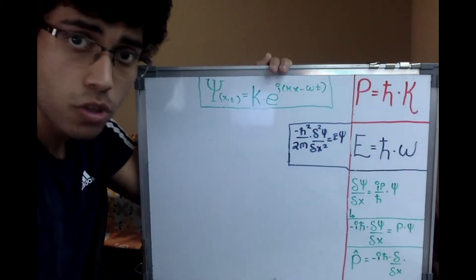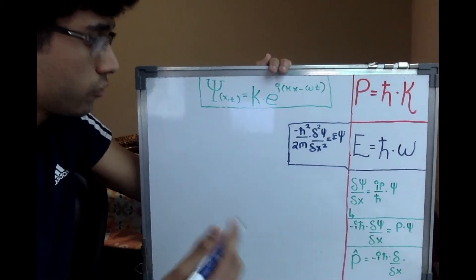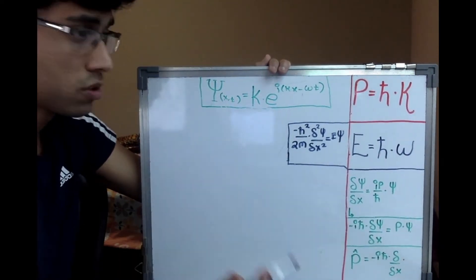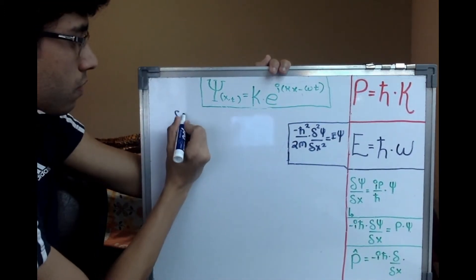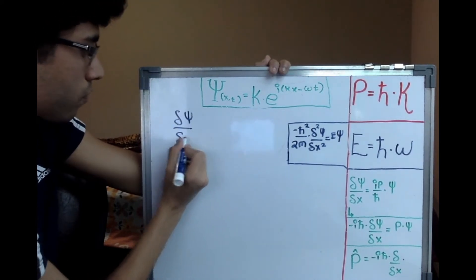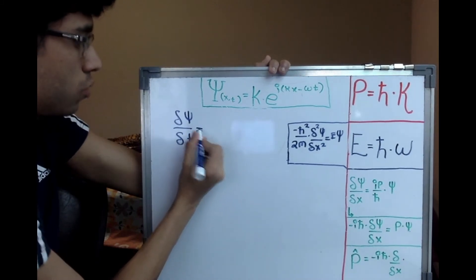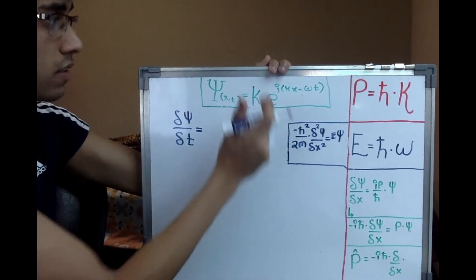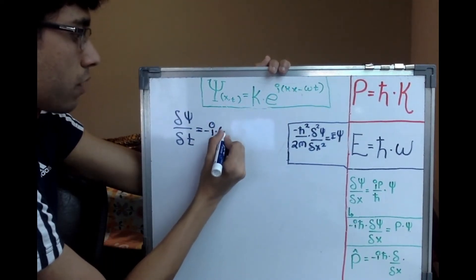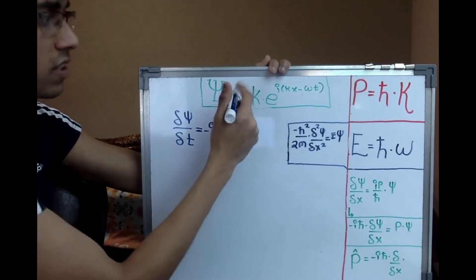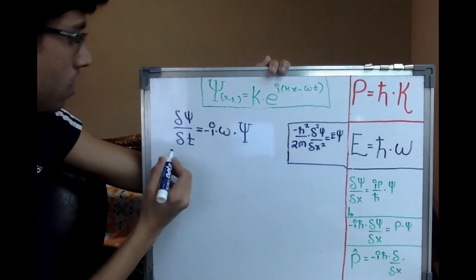Now I need to bring in the time dependency. Let's try to derive the energy with respect to time, by partially differentiating psi with respect to time. ∂ψ/∂t gives me negative i times omega times psi, since time is present in the exponent of the plane wave.